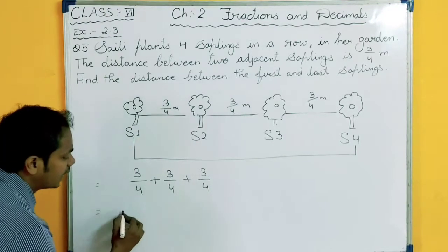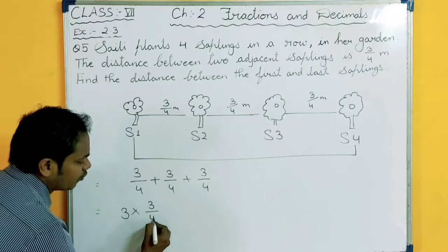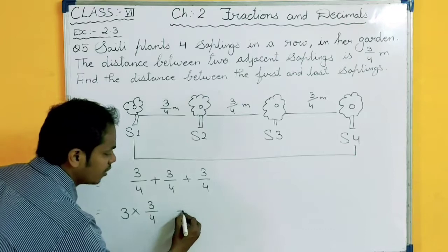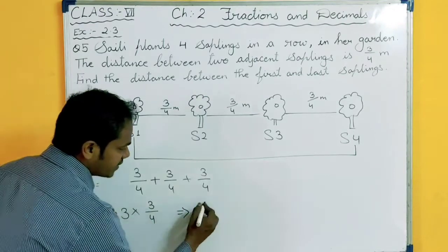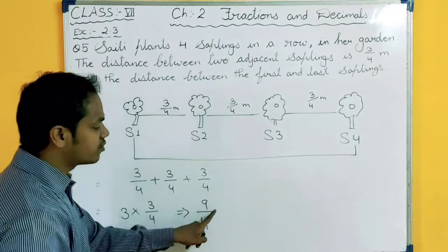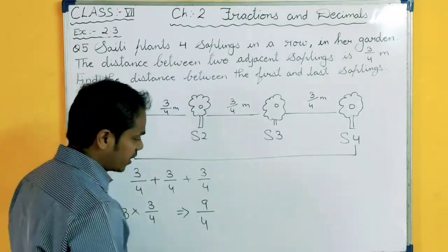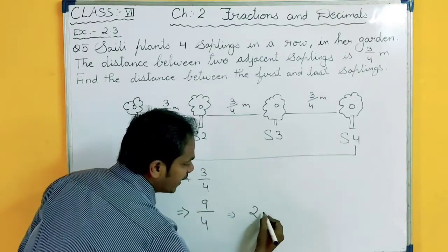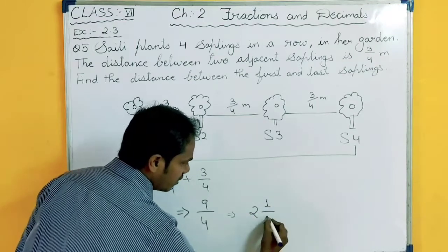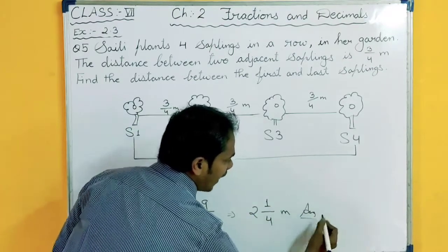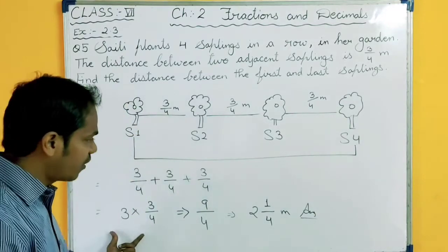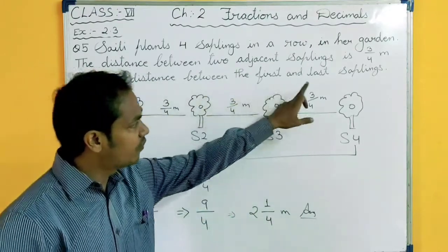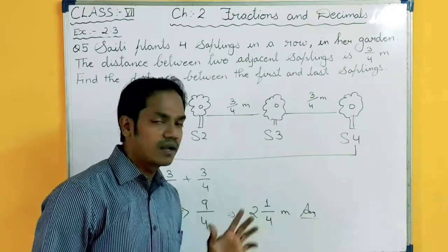So you can write this as 3 times 3 upon 4, since you are getting the same value 3 times. 3 multiplied by 3 is 9, upon 4. This is your improper fraction, so change it into a mixed fraction. 9 upon 4: 4 twos are 8, remainder 1 upon 4 meter. So finally the distance between the first and the last saplings is 2 and 1 by 4 meter.